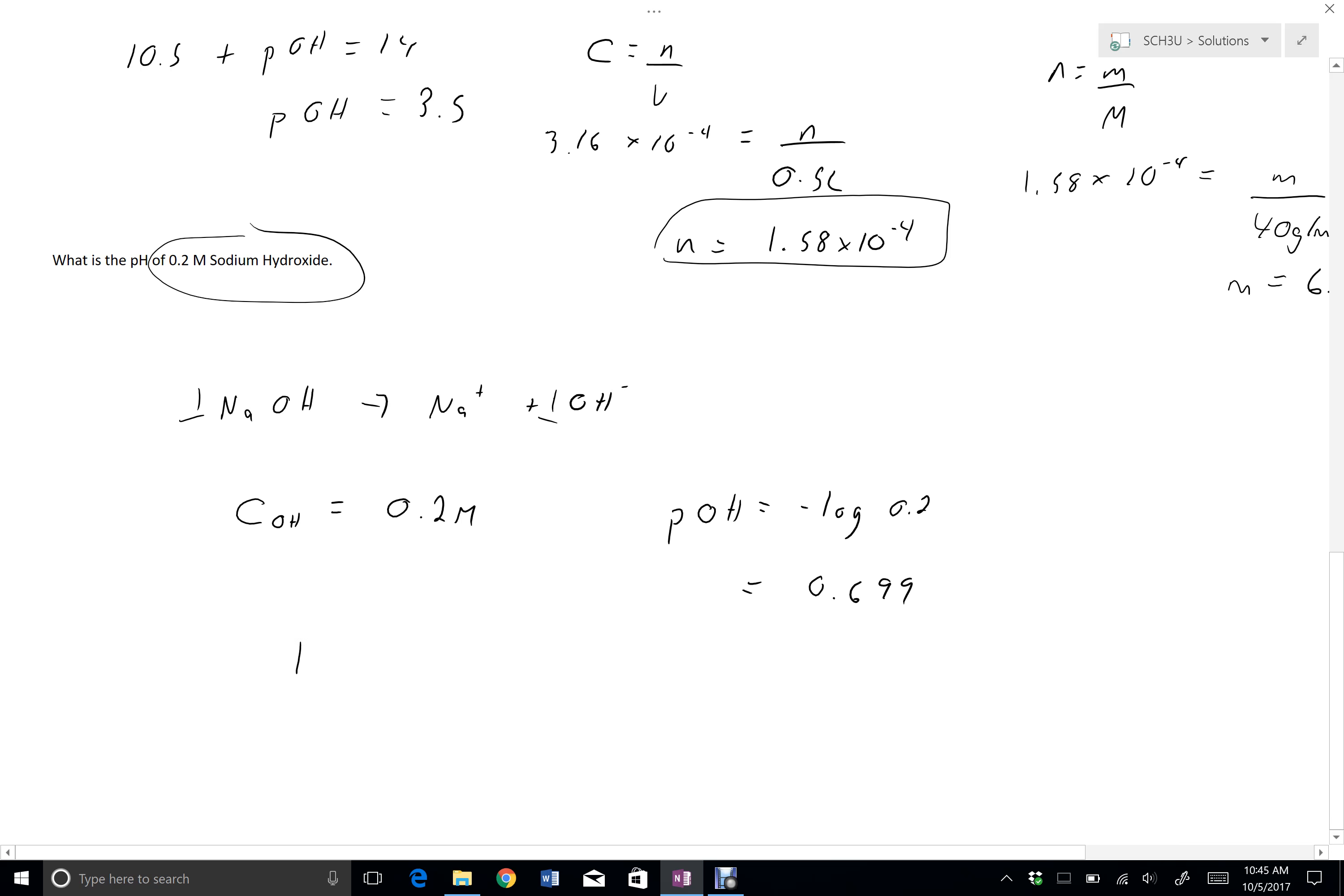And then if I recognize that my pH plus my pOH is equal to 14, if my pOH is 0.699, then my pH is going to work out to be 13.3.